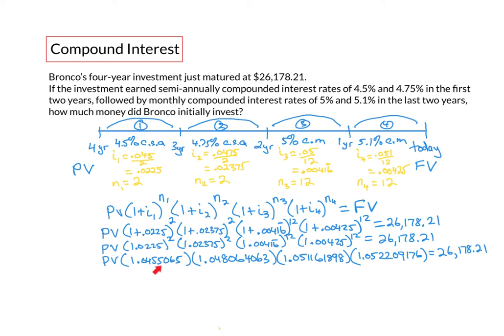And notice I'm keeping as many decimal digits as possible for now to increase the accuracy. Next we go ahead and multiply all of these four numbers together, and when we do that we end up with 1.21195, etc.